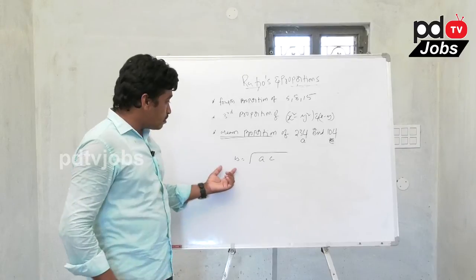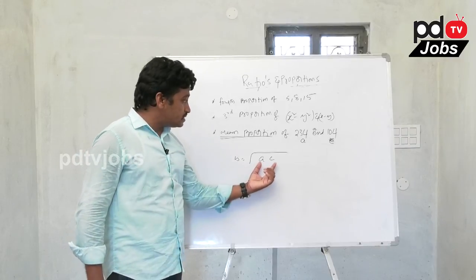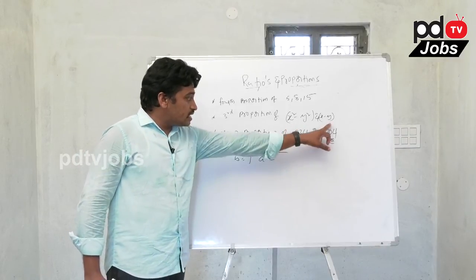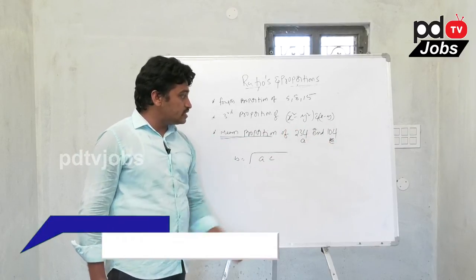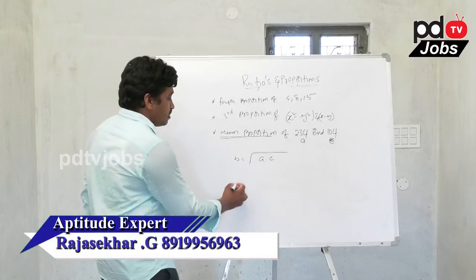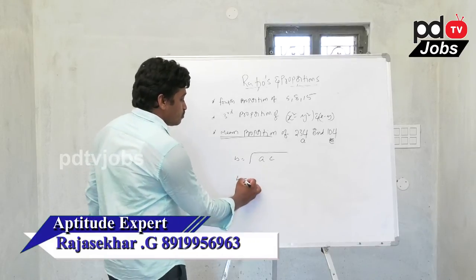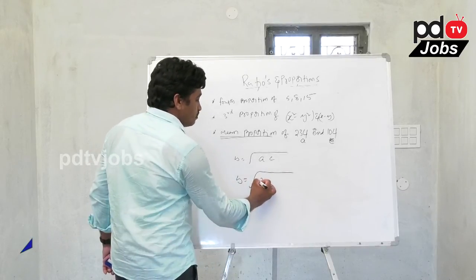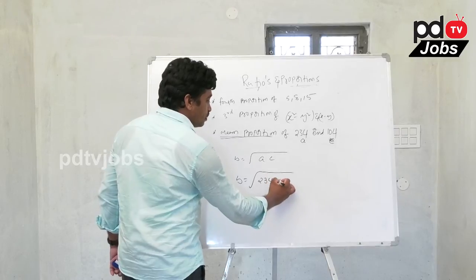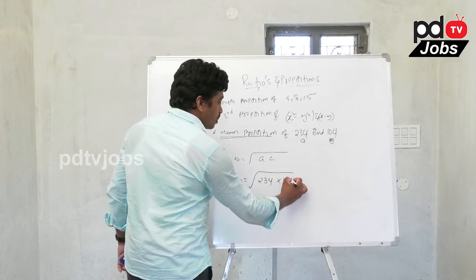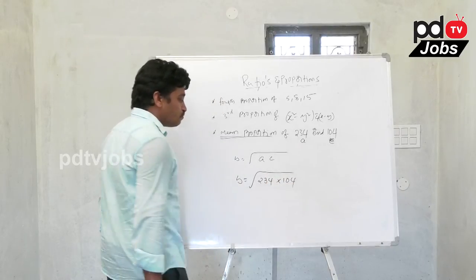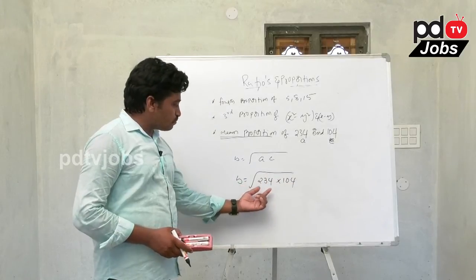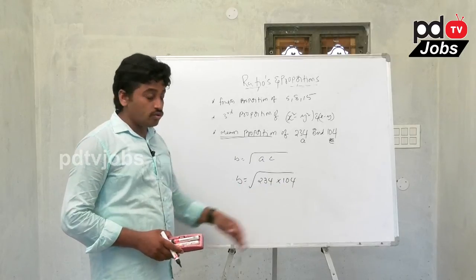Using the formula b = √(ac), with a = 234 and c = 104, we get b = square root of 234 into 104.